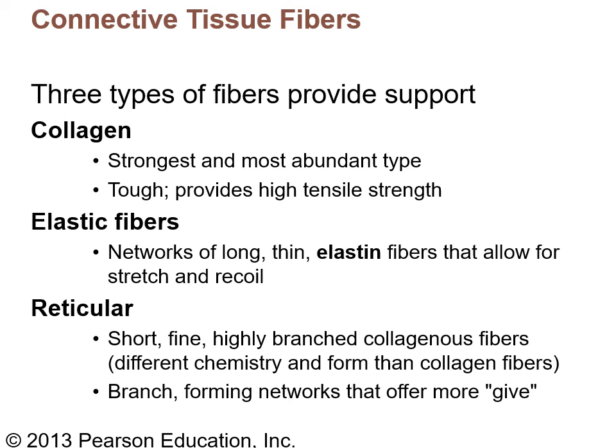Connective tissue fibers provide support. Collagen is the strongest and most abundant fiber type — from chapter 2 we know it's a triple braid that resists tearing, providing very high tensile strength. Elastic fibers are long, thin fibers that can be stretched and recoil. Reticular fibers are short, fine, highly branched collagenous fibers that are much thinner than collagen, allowing more give, and they branch.